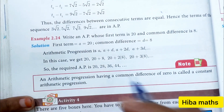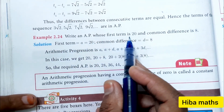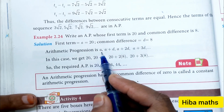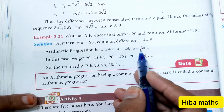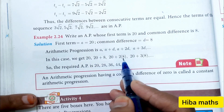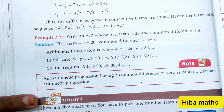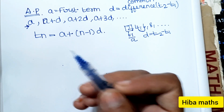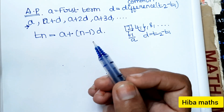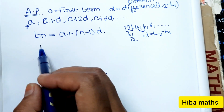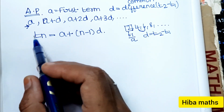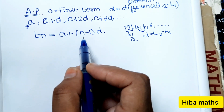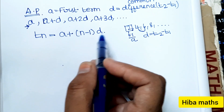Example 2.24: Write an AP whose first term is given and common difference d is equal to 8. In the arithmetic progression formula, we substitute the 'a' value and 'd' value to find each term. The T(n) formula is now used: T(n) is equal to a plus (n minus 1) into d.